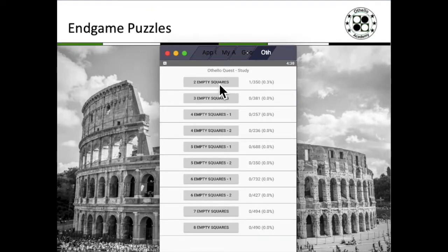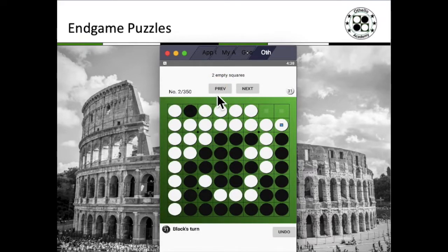Starting from the simplest, which is the two empty squares puzzle, we can just jump right in. We've already completed the first puzzle that we've covered in the previous section of A-B counting. And over here, this would be the second puzzle.